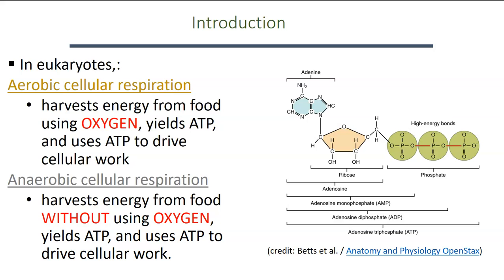All living organisms are going to use some form of cellular respiration. Cell respiration is really a way that we are able to make ATP by harvesting it from the food materials that our cells are taking in. ATP is really our energy currency of the cell.